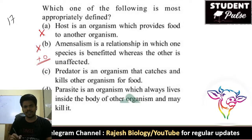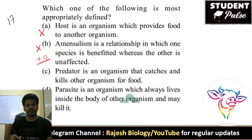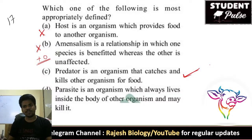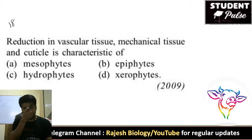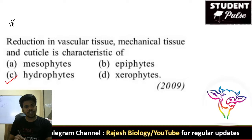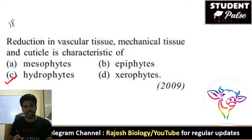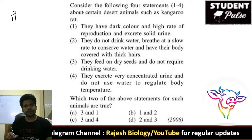For question 17, a parasite is an organism which always lives inside the body — that is also wrong because ectoparasites also exist. A predator is an organism that catches and kills another organism for food; the other organism is called prey. So the right answer is option C. For question 18, reduction in vascular tissue, mechanical tissue, and cuticle is characteristic of hydrophytes because they live in water and don't require a tough cuticle — they can absorb nutrients directly from their surroundings.